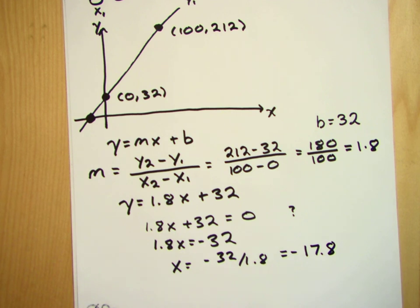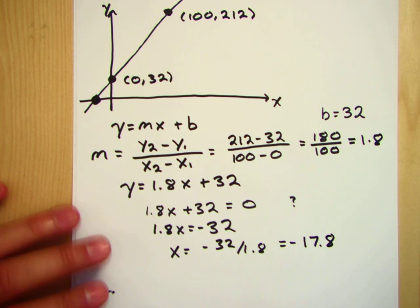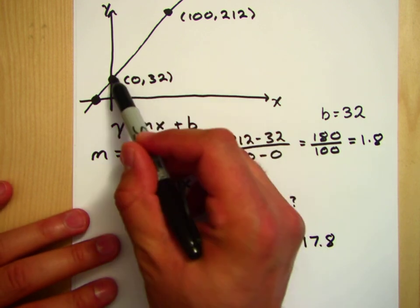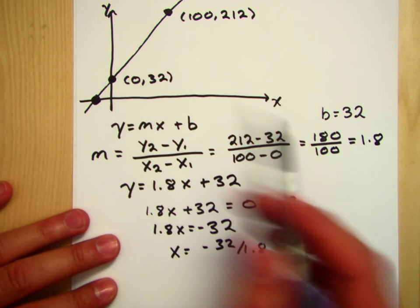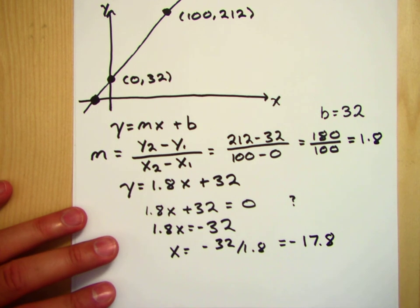So what is the purpose, or practically speaking, what are the intercepts here? Well, the y-intercept here, this is when Celsius, x, is equal to 0. That's the freezing point of water.